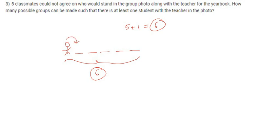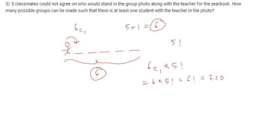Only one student can stand beside the teacher. The number of ways to select that student will be 6C1, and the remaining five students can stand among themselves in 5! ways. So the total number of ways will be 6C1 × 5! = 6 × 5! = 6! = 720. So there are 720 possible groups such that there is at least one student with the teacher in the photo.